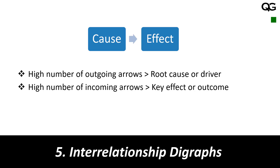What we do with this cause and effect diagram is look at the interrelationships between the different aspects. If we connect those pieces of the fishbone diagram, what we come out with is the root cause, the driver, the key effect, or the outcome. In interrelationship diagrams, the point where you see a lot of arrows going in will be the outcome, and the item with a lot of arrows going out will be the key driver or root cause.